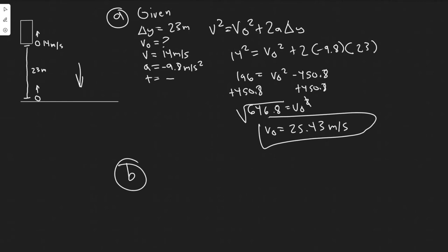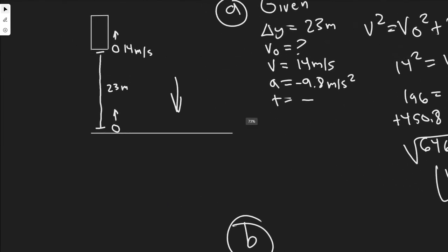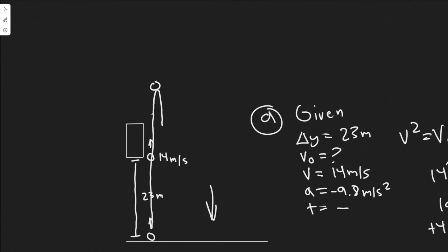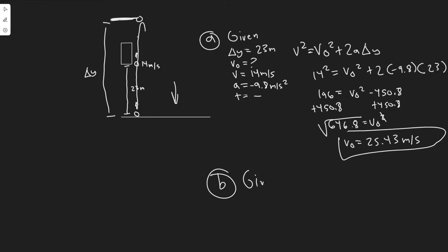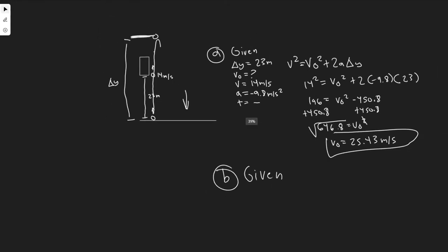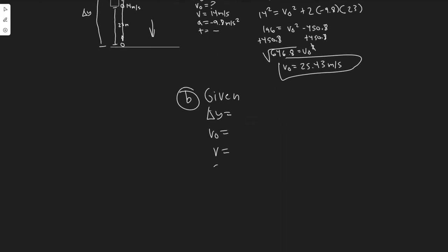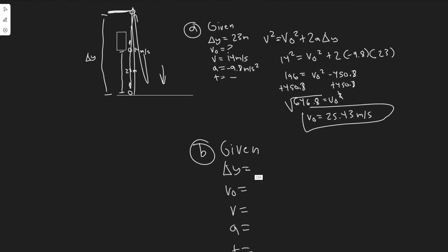Moving on to B: finding the altitude the ball reaches. The ball is thrown up and reaches some maximum point, then falls back down. We want to find this altitude — essentially the change in y. Writing down our variables again: delta y is what we're solving for. The initial velocity we know from the last problem: 25.43 meters per second. At the maximum point, the final velocity is always equal to zero, because at the very maximum point the ball is no longer moving upward — it's basically frozen.